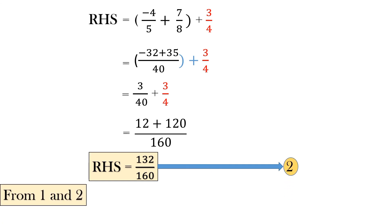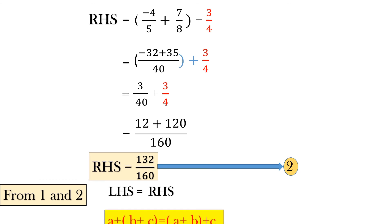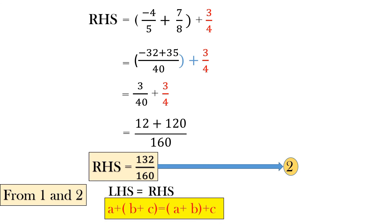From equations 1 and 2, left-hand side is equal to right-hand side. Therefore, (a + b) + c is equal to a + (b + c). Hence verified.